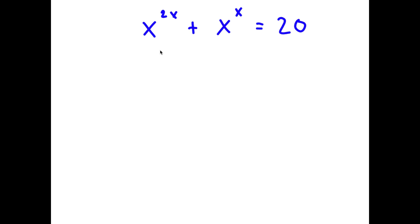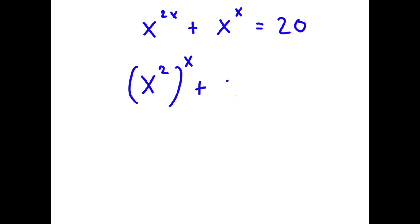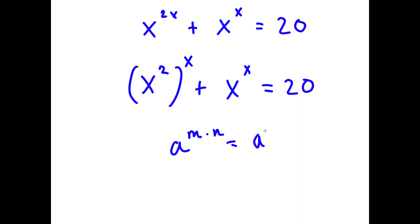In this problem I have x to the power of 2x plus x to the power of x is equal to 20. I'm going to rewrite 2x as x to the power of 2 to the power of x. This is valid because a to the power of m times n is the same thing as a to the power of m to the power of n.